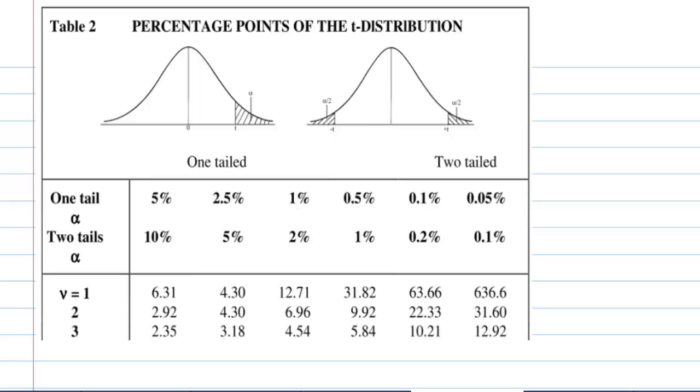This is how we obtain the critical value of negative 2.68 from the t-distribution table. Table 2 is a table for t-distribution, and we have a 1-tail test here.